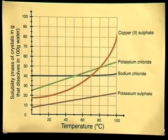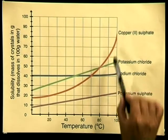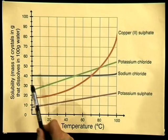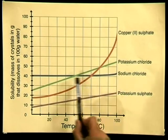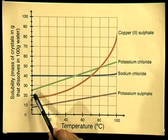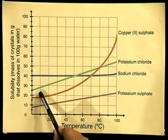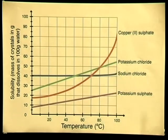There are some interesting observations you can make by looking at this graph. Can you see that each of the solutes behaves differently? Do you notice that sodium chloride solubility hardly changes as the temperature increases? But potassium chloride solubility increases steadily as the temperature increases. The graph is a straight line.